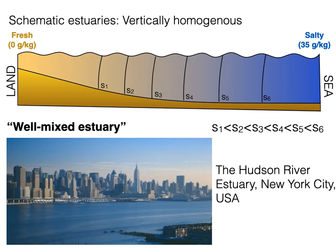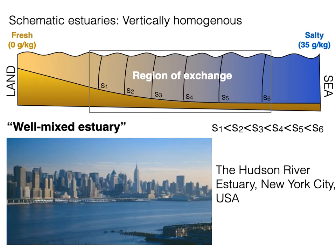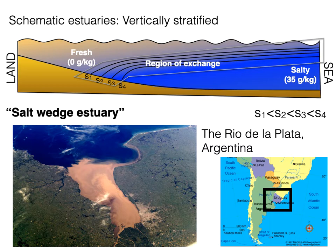In this type of estuary there is a region of exchange — all the locations where the salinity is neither that of the sea nor the river, but some intermediate value. In this intermediate zone, mixing must occur between salt water and fresh water to create these intermediate salinities. It is that exchange we are interested in, because other properties besides saltiness are also exchanged — including pollutants.